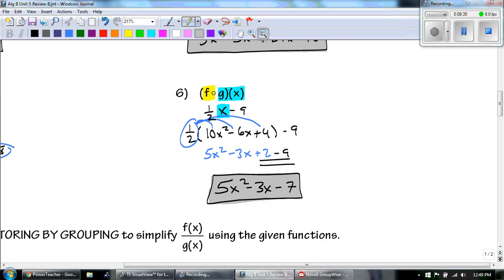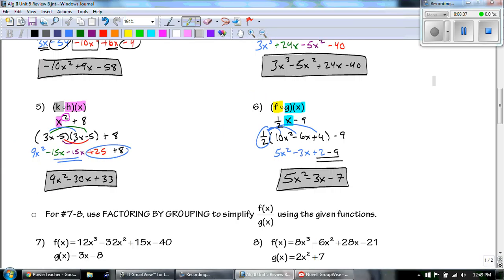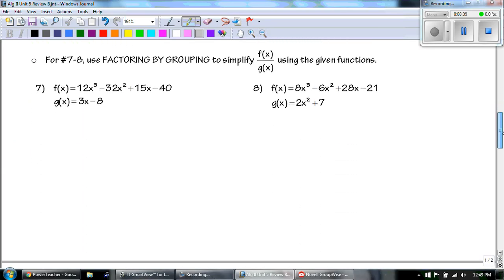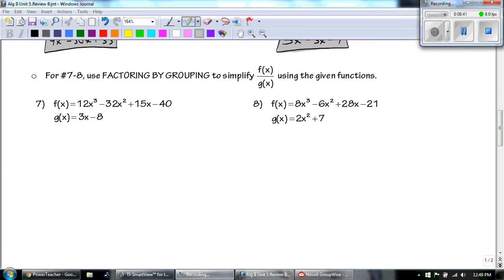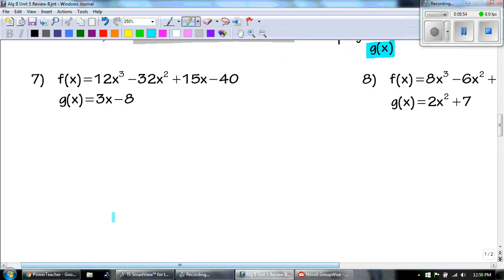So, same thing with 6. I'm going to start with the f. That's the 1 half x minus 9. And then I'm going to plug in the g of x. So the 1 half goes out front. And then I have my 10x squared minus 6x plus 4 minus 9. I need to distribute the 1 half.